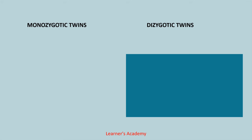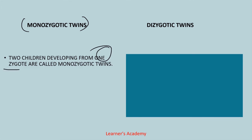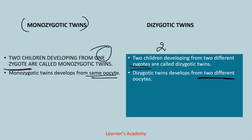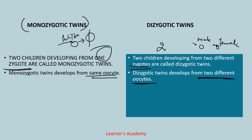What is the difference between monozygotic twins and dizygotic twins? When two children develop from one zygote, they are called monozygotic twins. On the other hand, if two children develop from two different zygotes, they are called dizygotic twins. Monozygotic twins develop from the same oocyte, whereas dizygotic twins develop from two different oocytes, meaning two oocytes have been fertilized during intercourse. Since two different sperms fertilize the oocytes in dizygotic twins, they can be of different sexes — one child can be male and the other female.